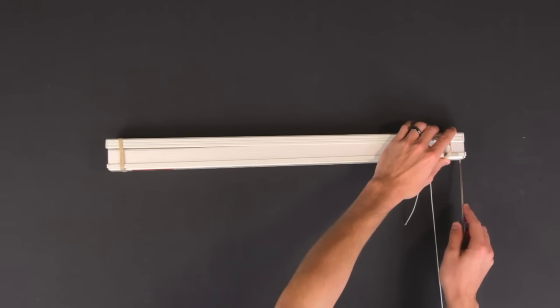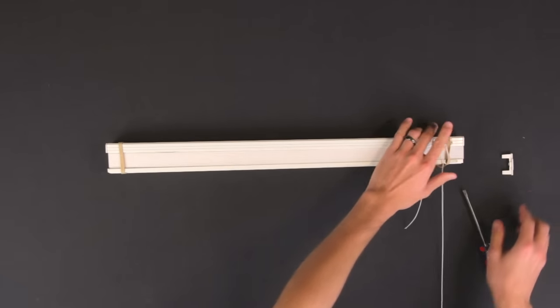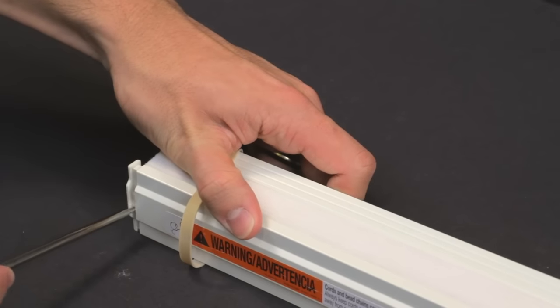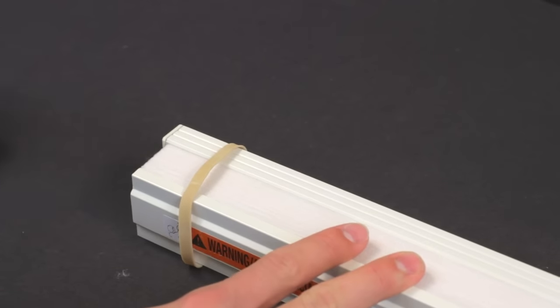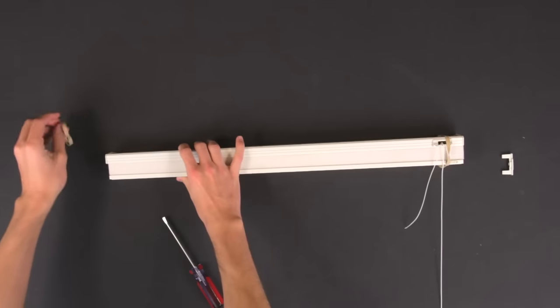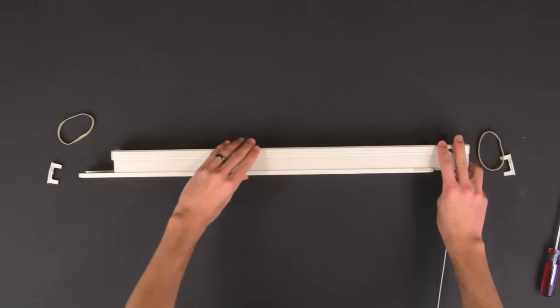Remove the end caps from the bottom rail and set those aside. Now slide the bottom rail off.